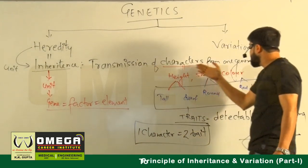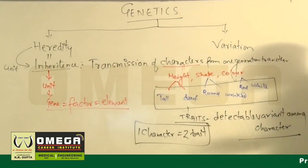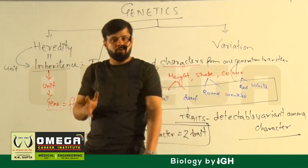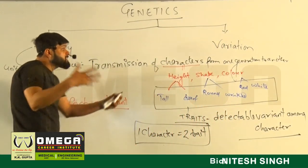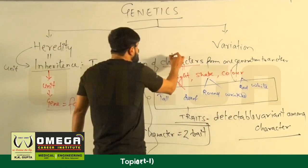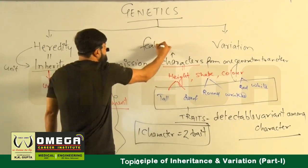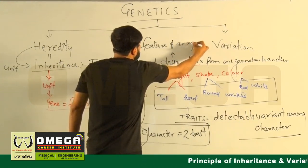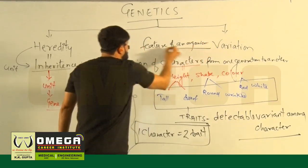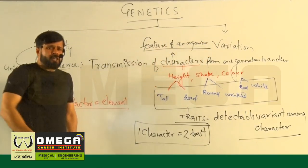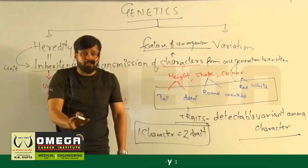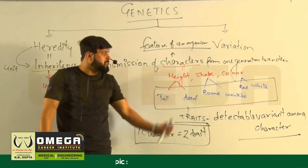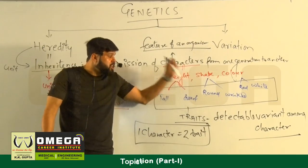Inheritance is the transmission of characters from one generation to another. A character is a feature of an organism. Examples of characters include height, color, and shape.